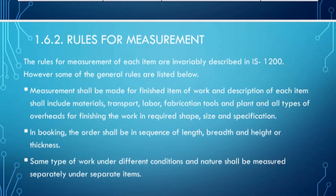That is rules of measurement as per IS 1200 from section one to twenty-eight. They are having some rules for measurement. Measurement shall be made for a finished item of work and description of each item shall be made to include material, transport, labor, fabrication, etc. In booking of the order shall be sequence of length, breadth, height, thickness, etc. Some types of work under different conditions and nature shall be measured separately under this item.